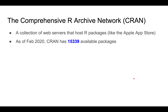So how and where do you get these packages from? We get packages from the Comprehensive R Archive Network, or CRAN. Basically, it's a collection of web servers that host R packages. You can think of it as similar to the Apple App Store — if you want to install an app on your iPhone, you just click a few buttons and it downloads and installs. Similarly, you can just type one command and R will automatically install the package from CRAN.